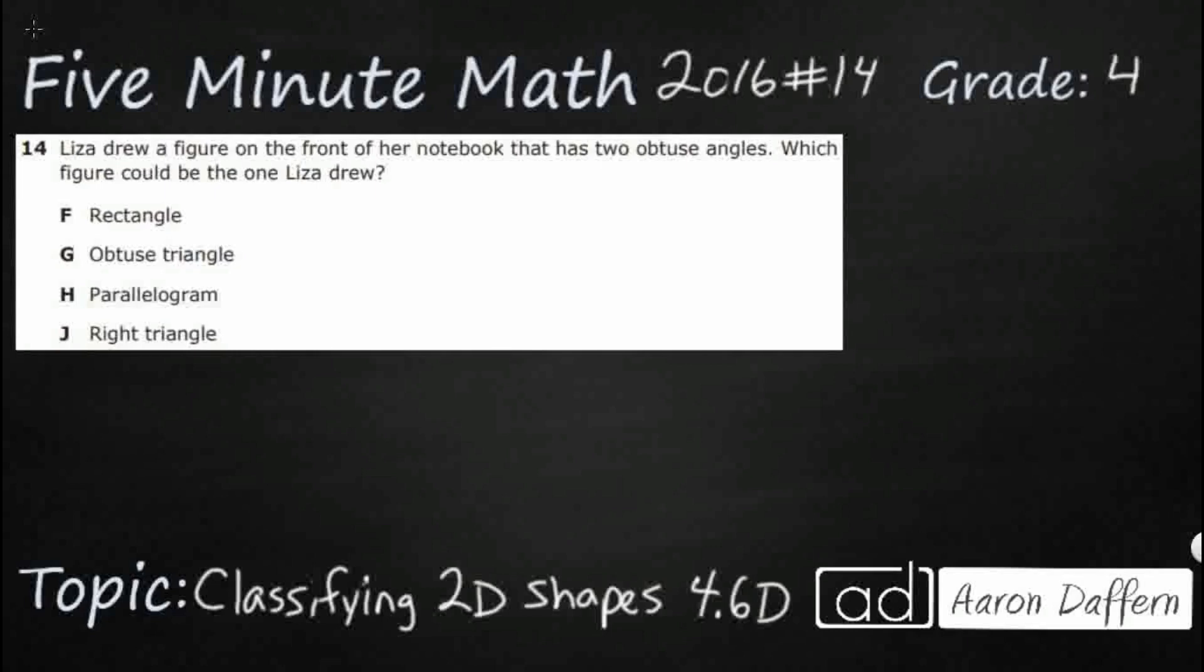So Liza drew a figure in the front of her notebook that has two obtuse angles. That's all we know - two obtuse angles. So let's make sure that we've got our angles down.